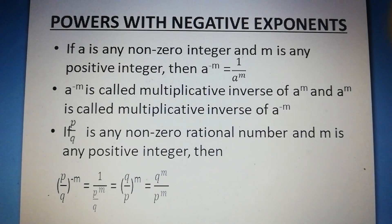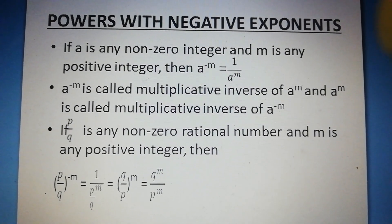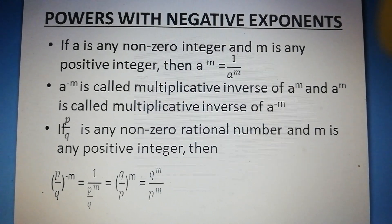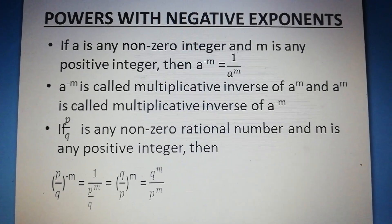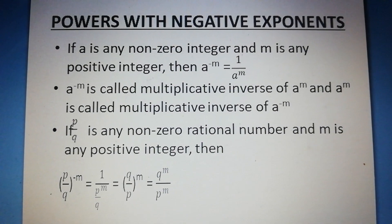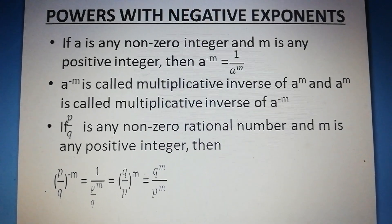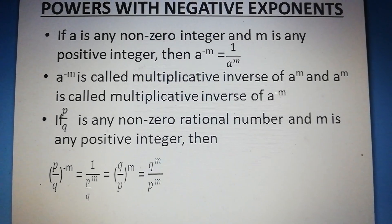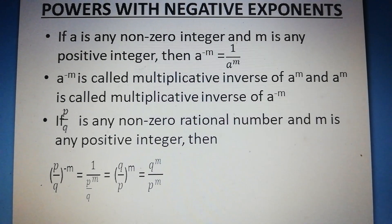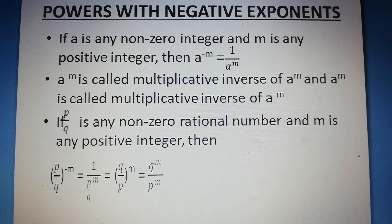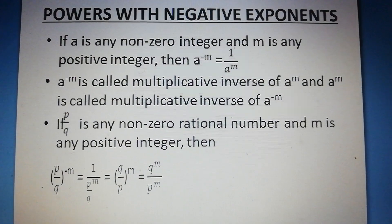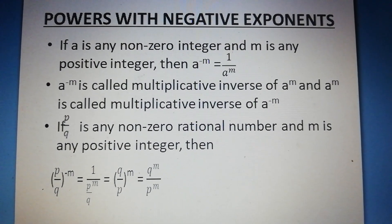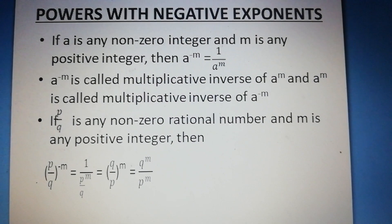From this we can say that a to the power minus m is the multiplicative inverse of a to the power m, and a to the power m is the multiplicative inverse of a to the power minus m. Again, if p by q is any non-zero rational number and m is any positive integer, then p by q whole to the power minus m is equal to 1 by (p by q) whole to the power m, which equals q by p whole to the power m, which equals q to the power m divided by p to the power m.